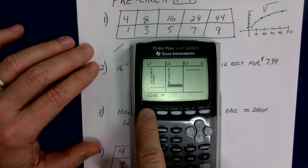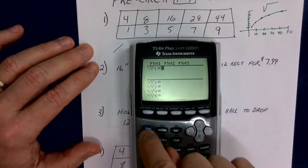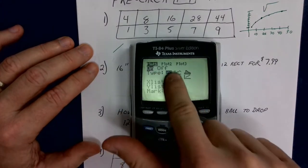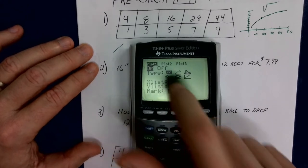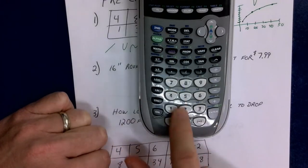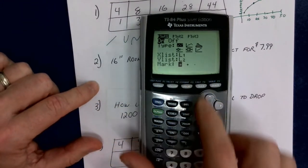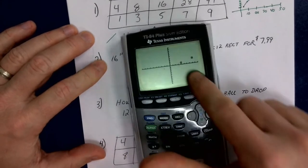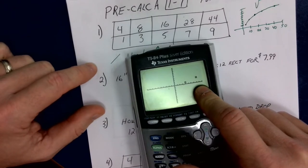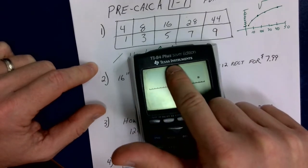Now I'm going to go to Y equals and clear anything in there. Then I go SECOND Y equals because I want to actually plot these points. I'm going to do a scatter plot — hit enter to turn plot number 1 on. I want it to be a scatter plot, with L1 and L2, because that's where I put my data. So second L1, second L2. Then I hit zoom 6 and I only see two points, because the first two points are the only ones that fit in the negative 10 to positive 10 window.